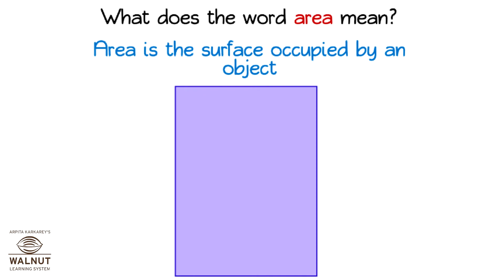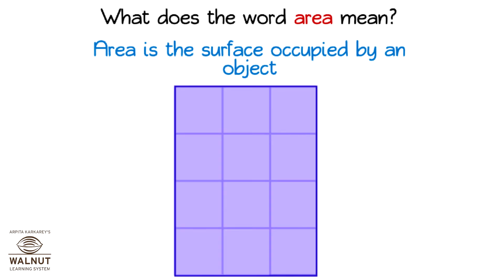Look at this rectangle. How can we find the area of this rectangle? We can draw smaller squares inside it. Each square has a side of 1 cm, so each square has an area of 1 square centimeter.